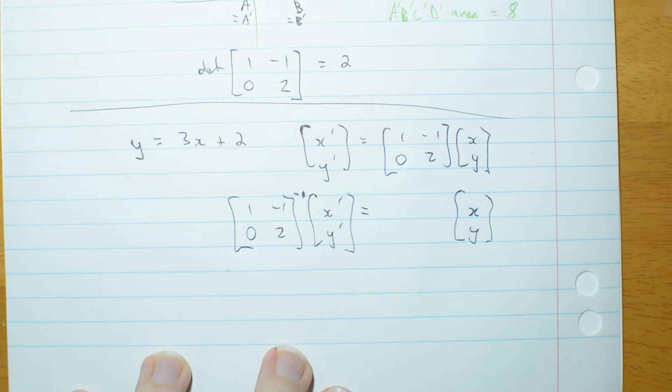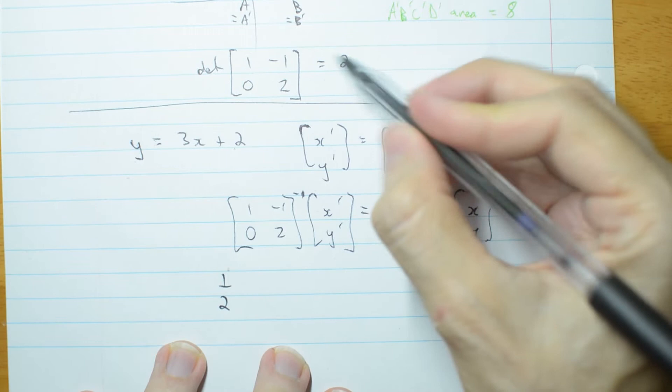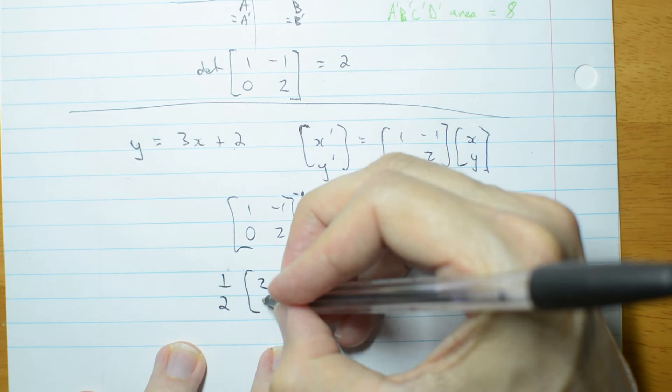Well, what is the inverse of that matrix? It's 1 over the determinant, which we decided was 2, times swap places, change signs.